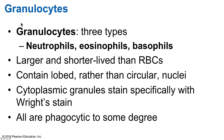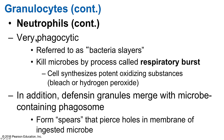There are three types of granulocytes: neutrophils, eosinophils, and basophils. They are usually larger than red blood cells but have a shorter lifespan. They are all roughly spherical in shape and have a lobed nucleus rather than a circular one. Their cytoplasm is stained with Wright stain, which allows us to see the granules. Functionally, they are all phagocytic to some degree.